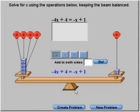So this little applet that I'm using asks me to add, subtract, multiply, or divide the same thing to both sides.